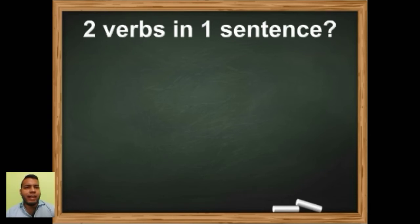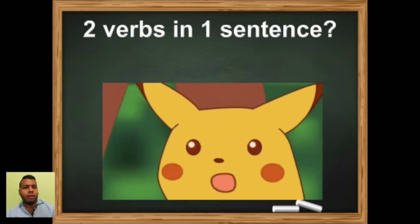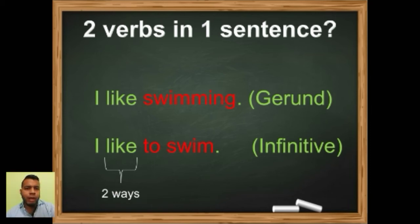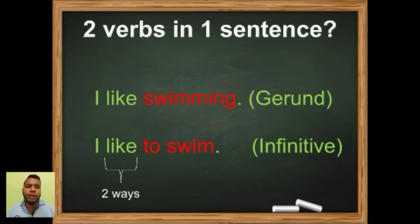Two verbs in a sentence — podemos tener dos verbos en una oración. For example: 'I like swimming' or 'I like to swim.' Ambas tienen el mismo significado — me gusta nadar. The first one is in gerund: 'I like swimming.' The second one is in infinitive: 'I like to swim.' Gerundio lleva -ing; infinitivo lleva la preposición 'to.'